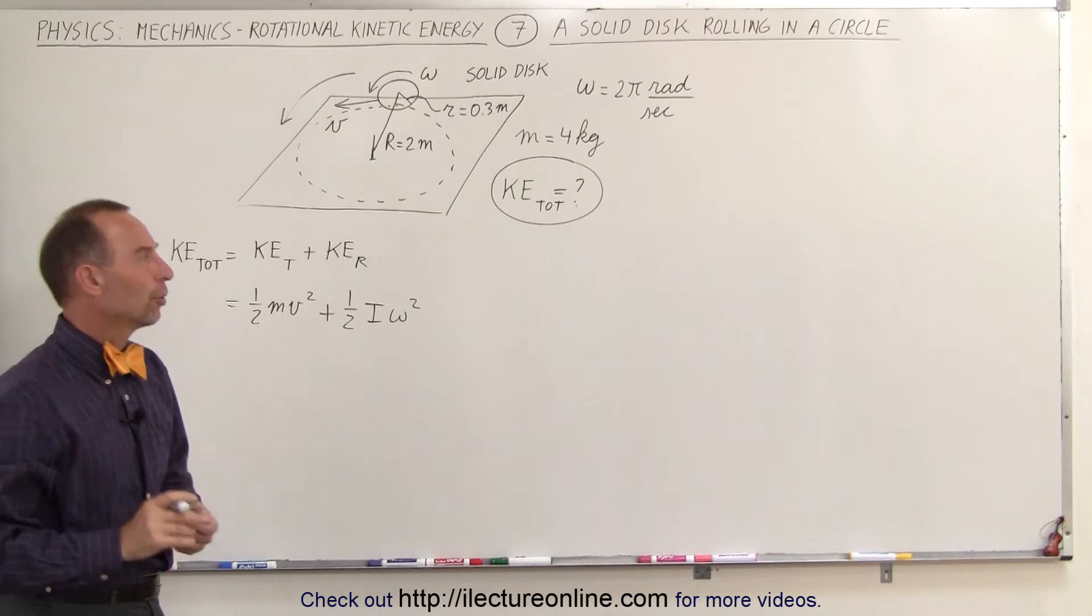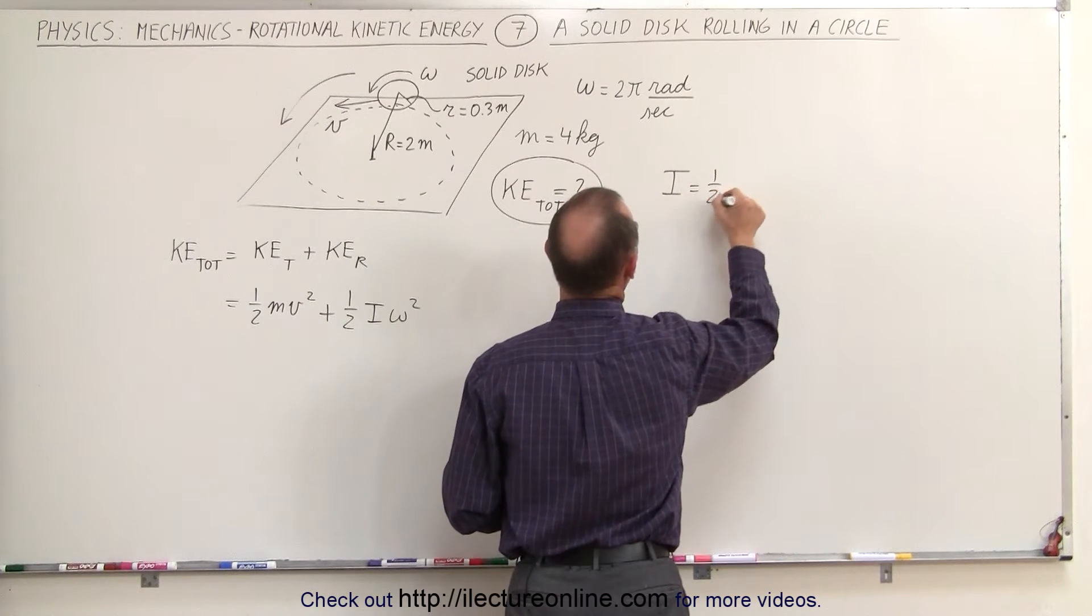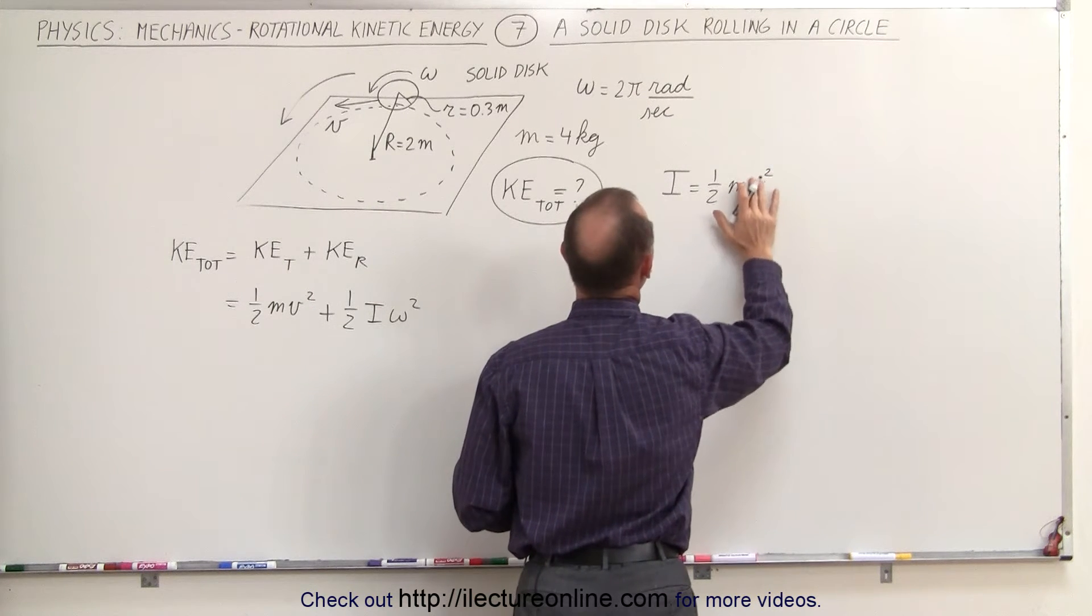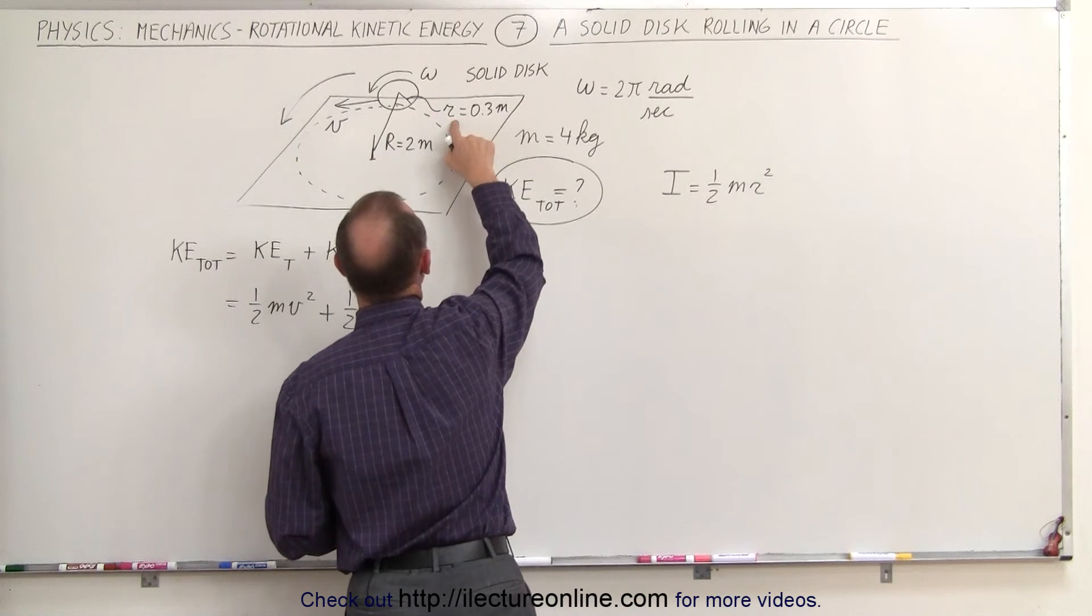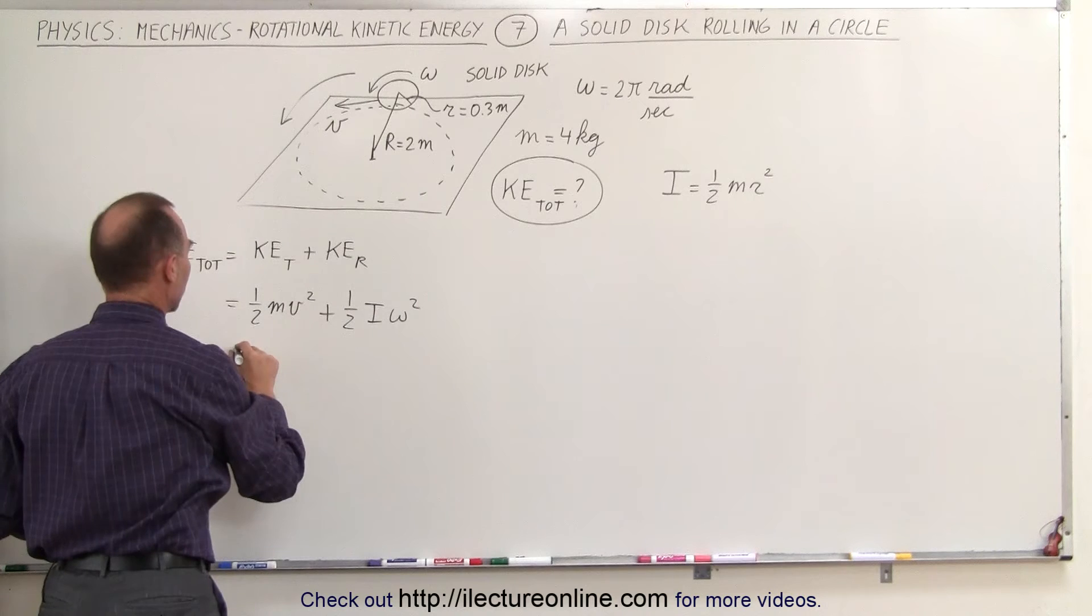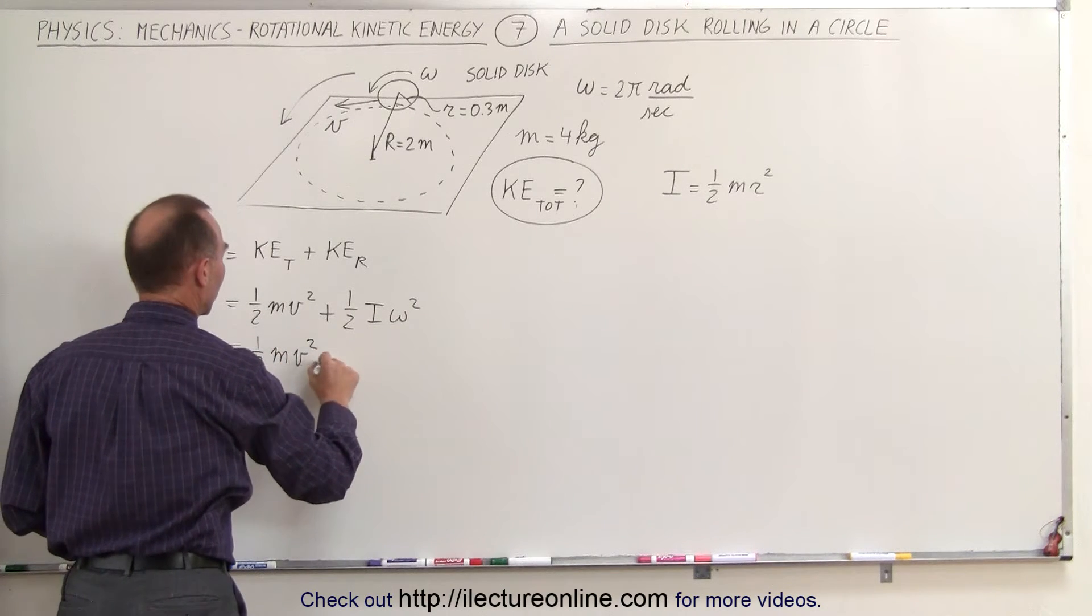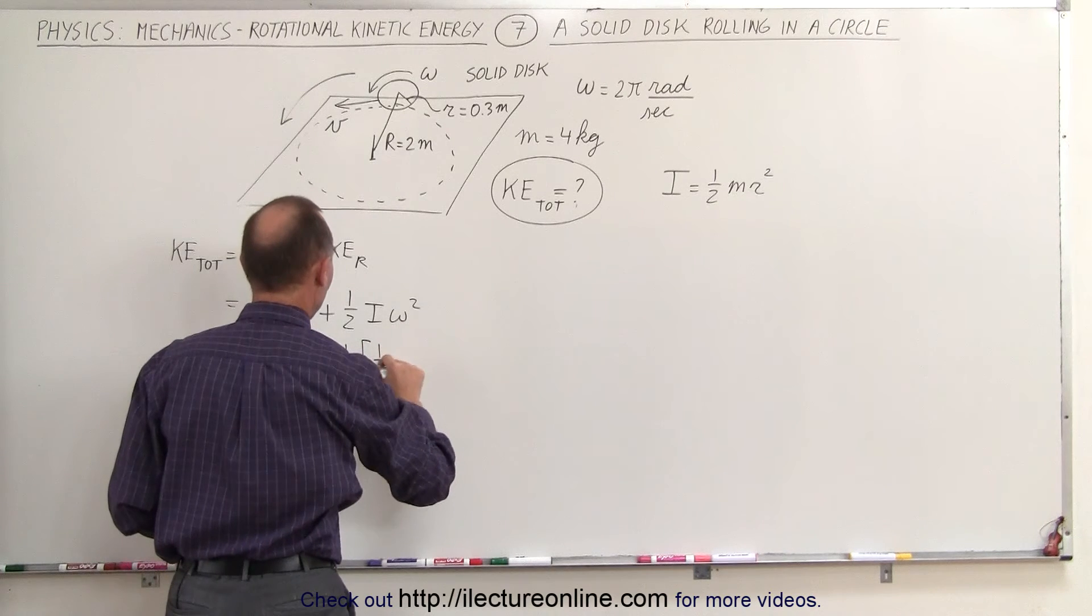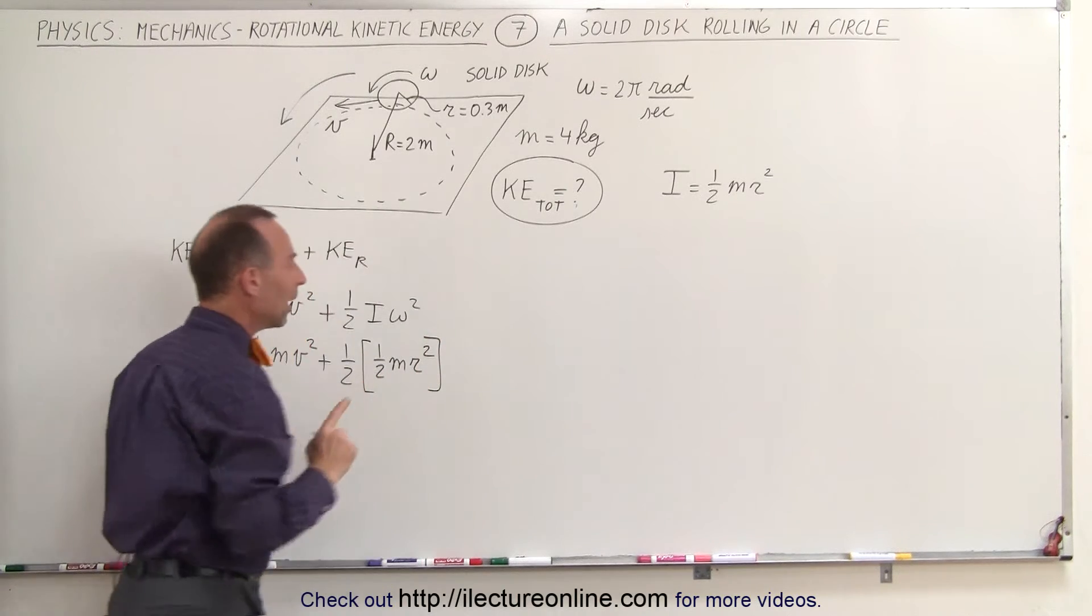But we do need to find the moment of inertia of a solid disk, and that is equal to 1/2 the mass times the radius squared. Now, notice, I'm going to use the small r here, because it's the radius of the disk, which I denoted here by small r. So this is going to now be written as 1/2 mv squared plus 1/2 times the moment of inertia, which is 1/2 m times r squared, r being the radius of the disk.